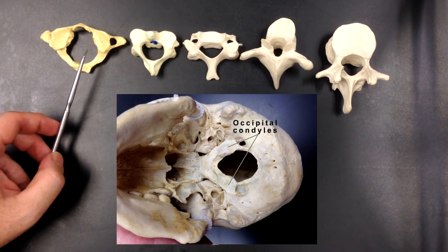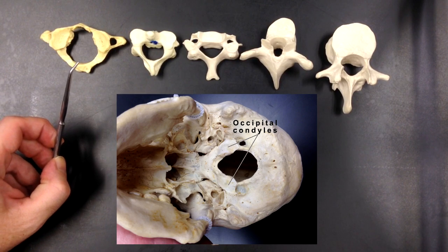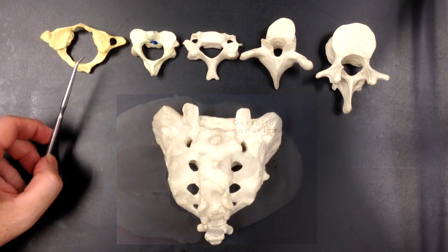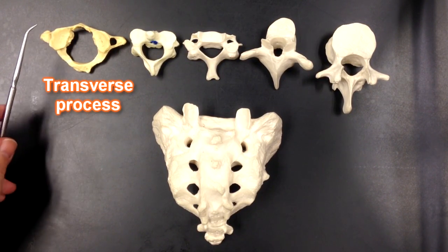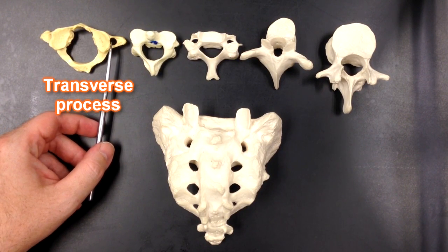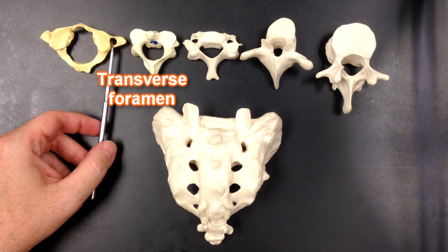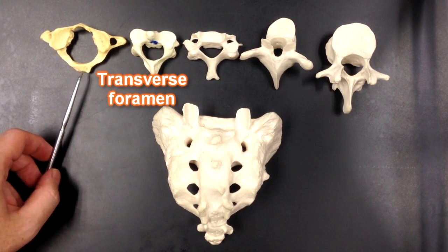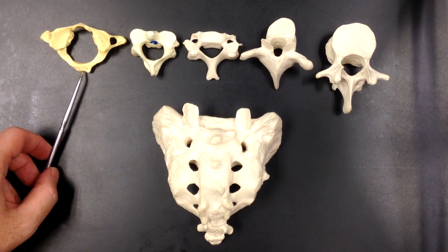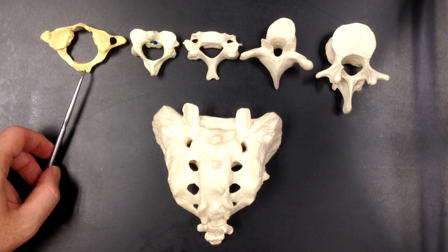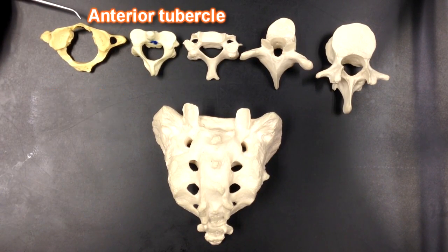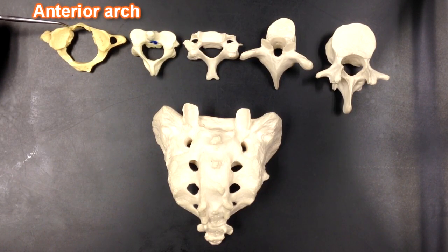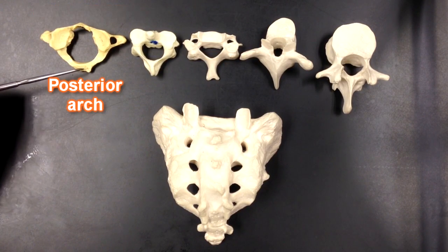The occipital condyles will articulate here. The occipital condyles are structures on the inferior-most bone in the skull. We can see transverse processes of the cervical vertebra, and in those transverse processes we have transverse foramen. Where a spinous process would be, it's replaced in the atlas with this big bump called the posterior tubercle of atlas. We also have an anterior tubercle of atlas, and that anterior tubercle is on the anterior arch of atlas.